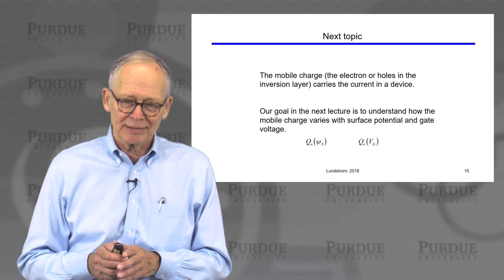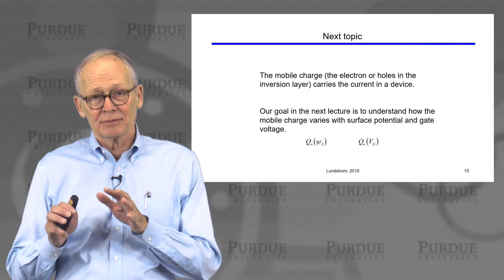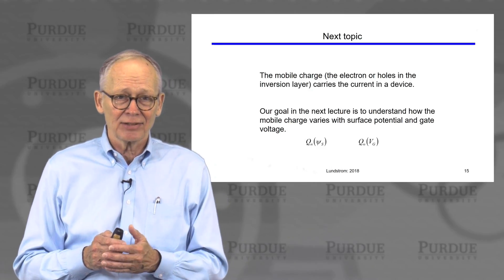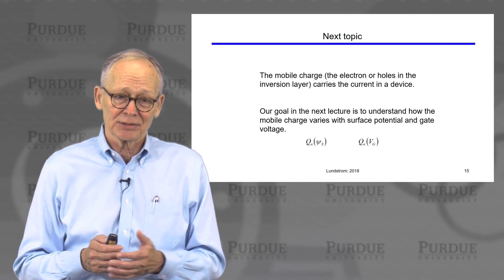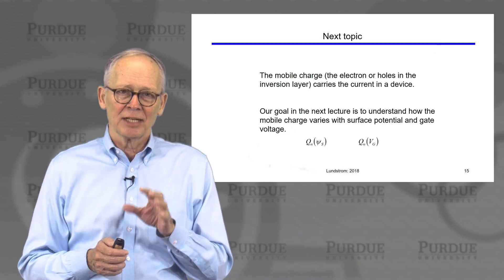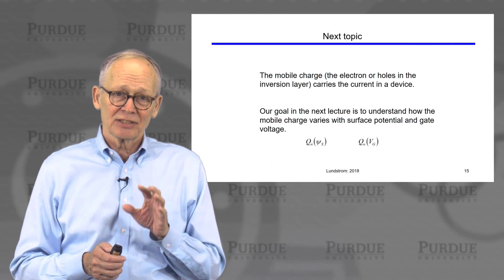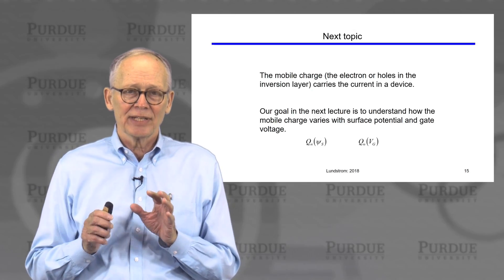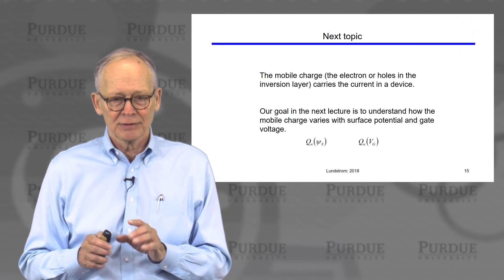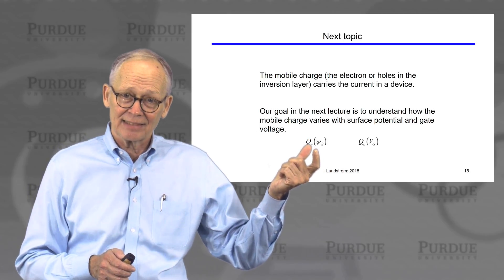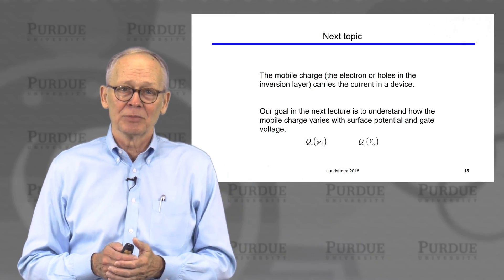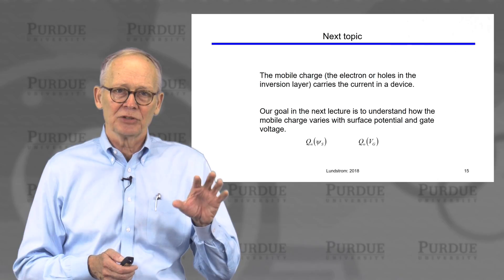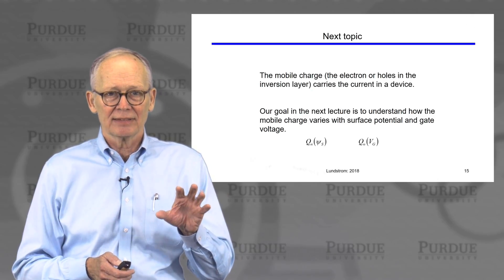Now we're ready to move on and begin preparing to understand MOSFETs. We've talked about charge in the semiconductor: depleted charge and inversion charge, both of which affect the CV characteristics. In a MOSFET, the current is carried by the mobile charge — the charge in the inversion layer: electrons in a p-type semiconductor, holes in an n-type semiconductor. For the next two lectures, we'll discuss this mobile charge. The mobile charge depends on the surface potential, which is determined by the gate voltage we apply.